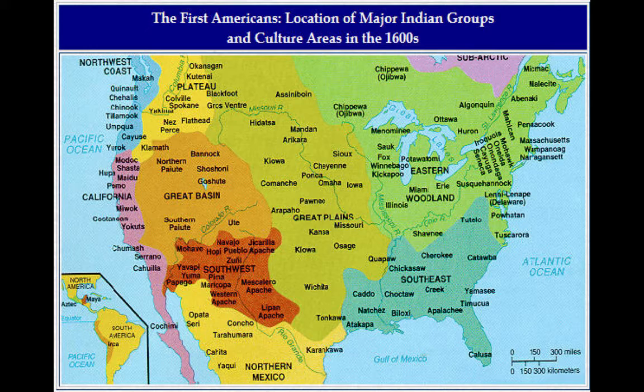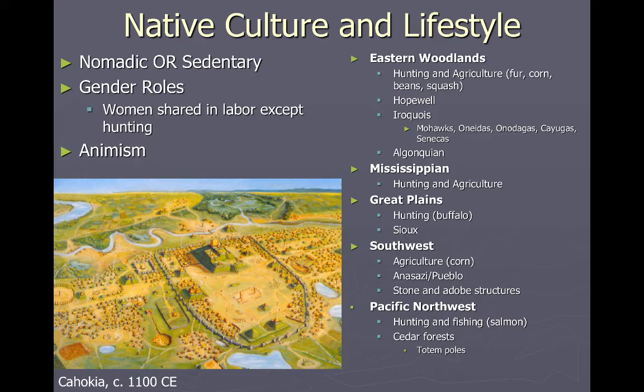When I talk about pre-Columbian civilizations, I go over the terms nomadic and sedentary — very important because you can use those terms to describe the different regional civilizations. Gender roles are pretty self-explanatory. There's also religion — animism — which is good to distinguish, especially in contrast to the religion coming from Europe later.